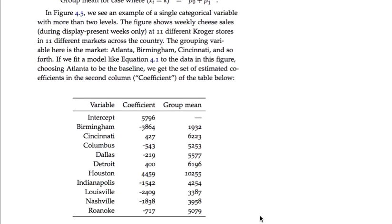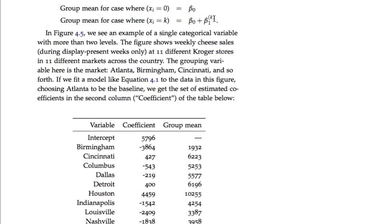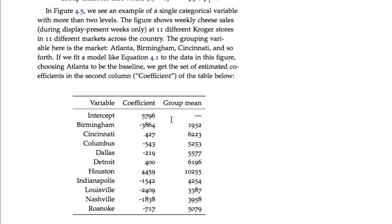If we want to see those coefficients in a table, here they are. The intercept — beta naught — is the baseline for the Atlanta store, and the 10 dummy variable coefficients are the beta_1^k offsets. Simple arithmetic: if you want the group mean for, say, the Detroit store, it's the baseline plus the offset for Detroit fit by least squares. For Nashville, it's the baseline plus its offset — 5,796 minus 1,838 gives exactly 3,958.